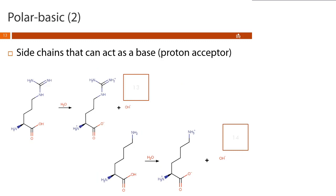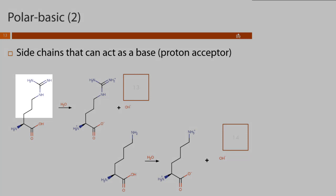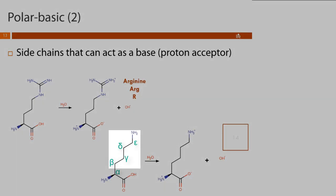Our next group are the polar basic amino acids — side chains that can act as a base and accept protons. Arginine has a guanidino group as a side chain; three-letter code ARG, one-letter R. Lysine has an amino group at the epsilon position; three-letter code LYS, one-letter K.